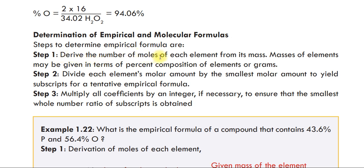Step 1: Derive the number of moles of each element from its mass. The mass of the element may be given in terms of percent composition or grams. Step 2: Divide each element's molar amount by the smallest molar amount to yield the tentative empirical formula. Step 3: Multiply all the coefficients by an integer if necessary to ensure the smallest whole number ratio of subscripts is obtained.